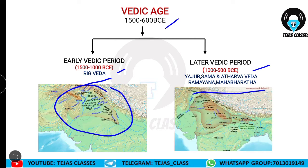In the later Vedic period, the Indo-Aryans who had settled in India spread to a wider extent — they spread up to the Gangetic plain. We will look into this in detail. Now let us see the sources of the Vedic age.